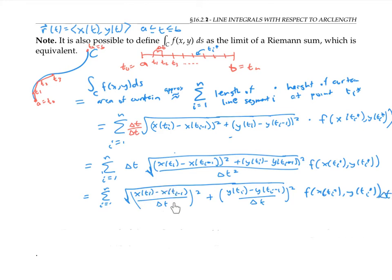Now these expressions here are actually difference quotients. They look a lot like the definition of derivative, right? And by the mean value theorem, we can actually replace this by the derivative x prime for some t value in the middle.